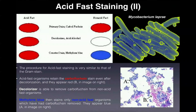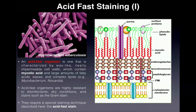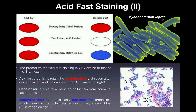Here's another acid fast organism — again it's a bacillus, or these are bacilli. This belongs to the species Mycobacterium leprae, which causes leprosy. So the two genera that comprise the acid fast organisms are Mycobacterium and Nocardia, and the two major diseases caused by acid fast organisms under the genus Mycobacterium are tuberculosis and leprosy.